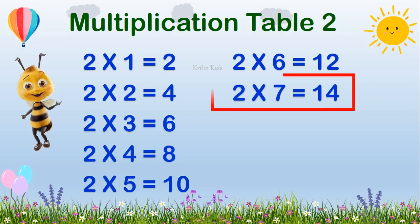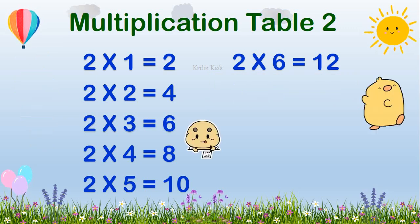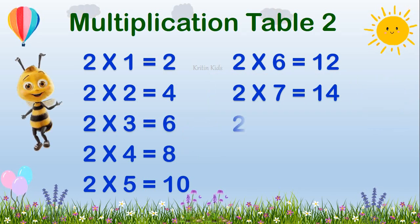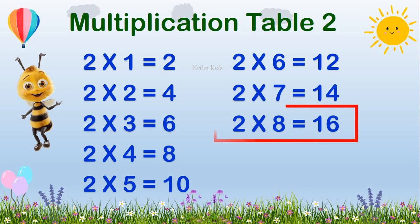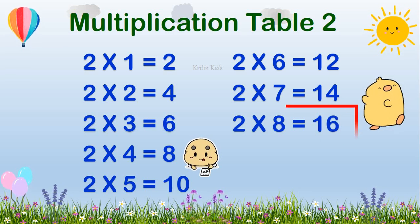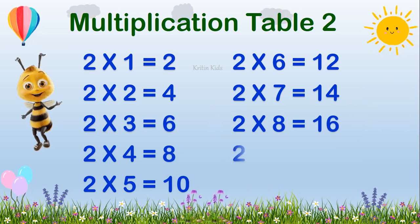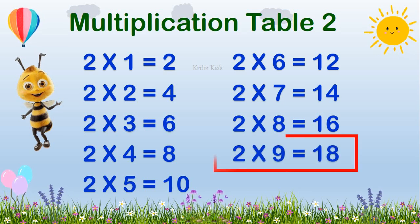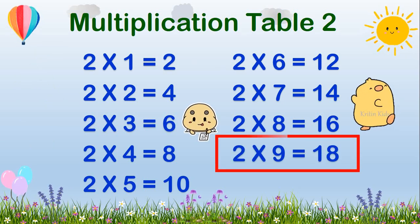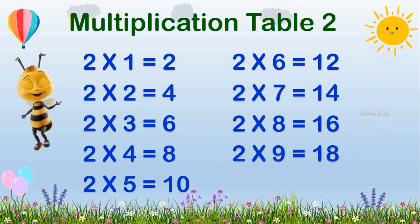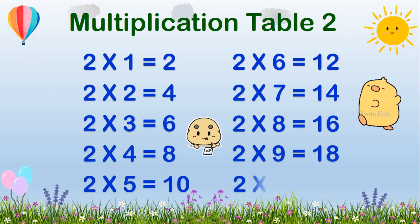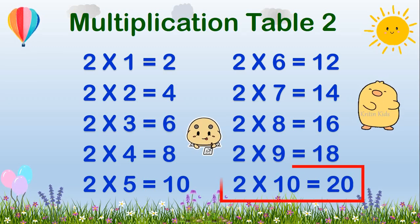Two, seven's a fourteen. Two, seven's a fourteen. Two, eight's a sixteen. Two, eight's a sixteen. Two, nine's a eighteen. Two, nine's a eighteen. Two, ten's a twenty. Two, ten's a twenty.